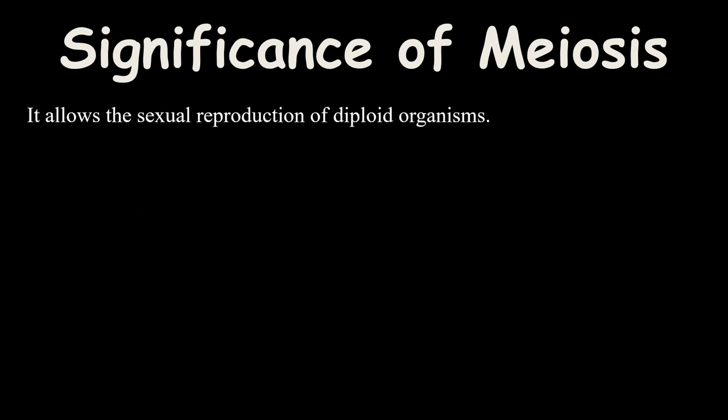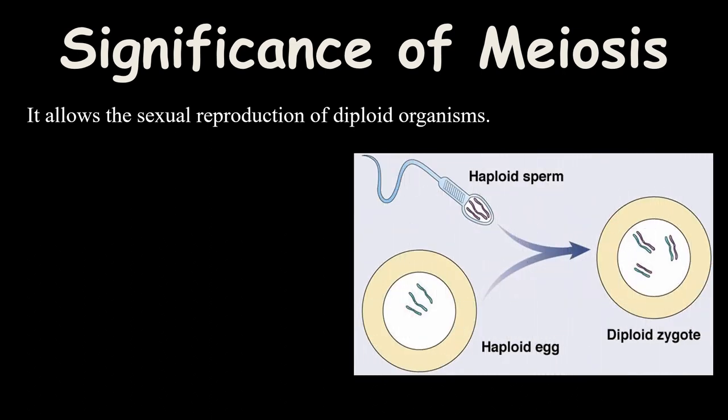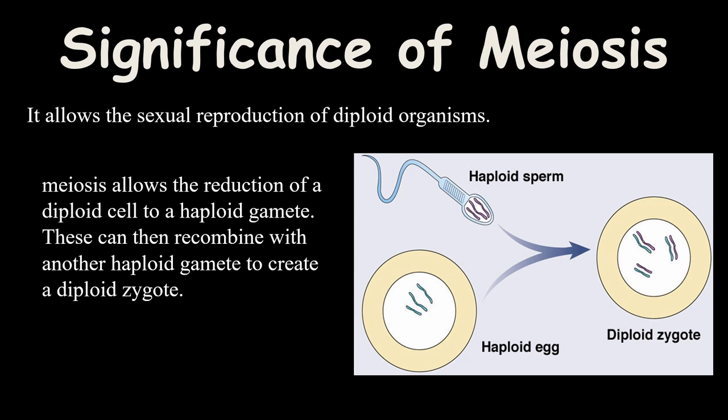The first significance of meiosis is that it allows the sexual reproduction of diploid organisms. It is involved in the reduction of chromosome numbers — 23 come from the mother and 23 come from the father — and these haploid cells together form the diploid zygote responsible for the development of the organism. Once zygote formation takes place, the cells undergo mitosis for the development of the fetus.